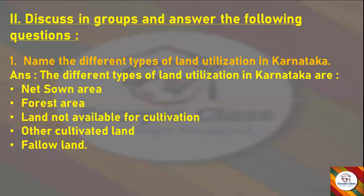Now we have the main question and answers. The first question is: Name the different types of land utilization in Karnataka. Answer: The different types of land utilization in Karnataka are net sown area, forest area, land not available for cultivation, other cultivated land, and fallow land.